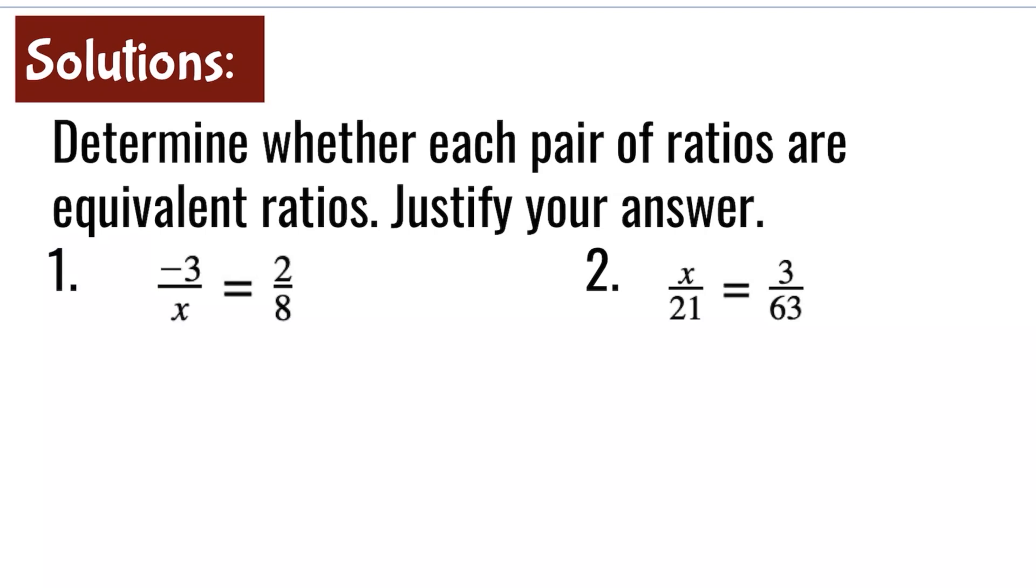Now let's go over the solutions to these 6 problems. For the first question, negative 3 over x is equal to 2 over 8. We can use cross products. Negative 3 times 8 is negative 24, is equal to 2 times x is 2x.